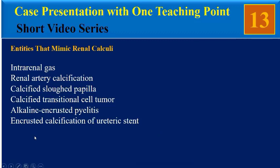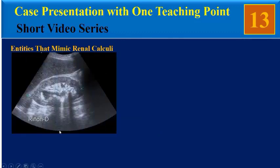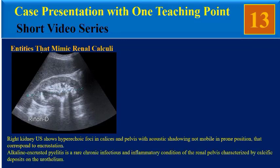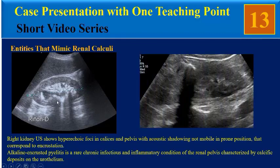Another entity is alkaline encrusted pyelitis. This transverse sonogram of the right kidney shows hyperechoic foci in calyces and pelvis with acoustic shadowing, not mobile on prone positioning, corresponding to encrustation. Alkaline encrusted pyelitis is a rare chronic infectious and inflammatory condition of the renal pelvis characterized by calcified deposits on the urothelium. Our patient is not compatible with this entity.